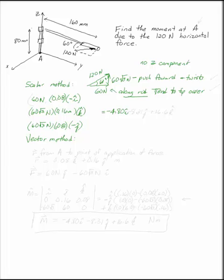This is 4.80i minus 8.31j plus 16.6k. That's the scalar method. And if you can visualize how each of these components twists that rod, you're all set.